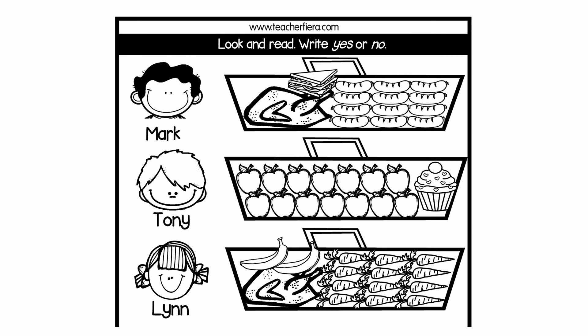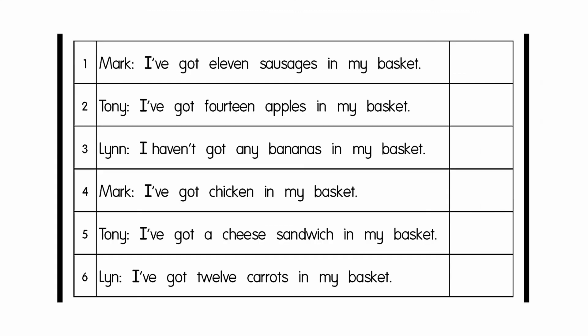Okay. Now you have to read the sentences below. If the sentence is true, write yes. If the sentence is false, write no. Let's do one together. Look at number one. Mark says, 'I've got eleven sausages in my basket.' Is it true? No. Mark has got twelve sausages. So write down NO in the box.